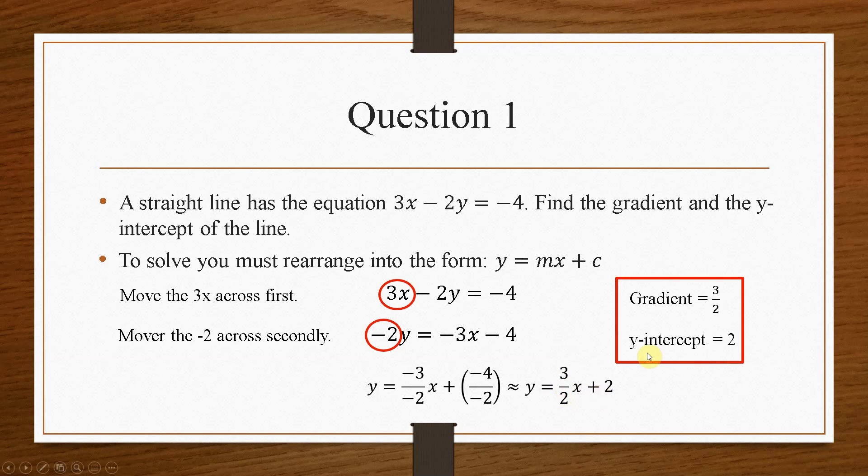So we can read off the gradient as m, which is the number that's timesed by the x, which is 3 over 2, and the value by itself, c, is the y-intercept, so in this case it is 2.